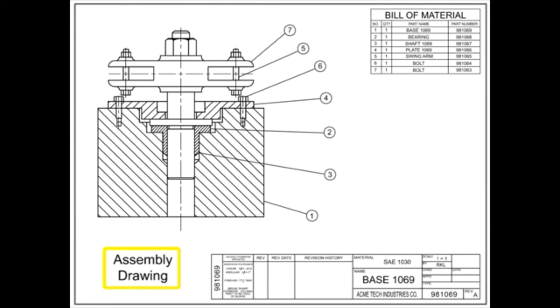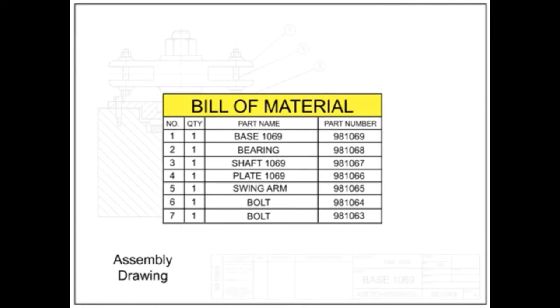An assembly drawing shows two or more separable parts joined to form a final product. The bill of material for an assembly drawing lists all the parts required to make up the assembly.